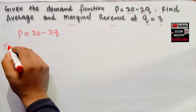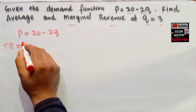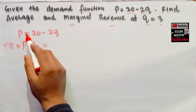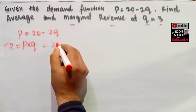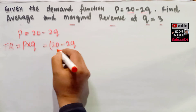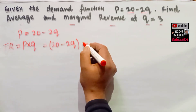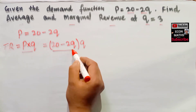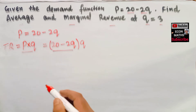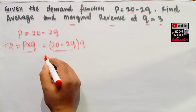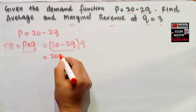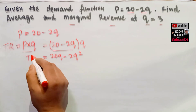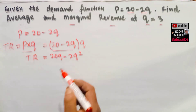Total revenue is equal to price into quantity. Our price function is 20 minus 2Q, and we multiply it by the quantity Q, because total revenue equals price into quantity. So when solving this, total revenue becomes 20Q minus 2Q squared. This is our total revenue function.